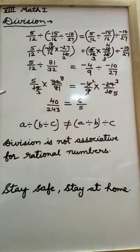This means while dividing 3 rational numbers, they can't be grouped in any order. So we can say division is not associative for rational numbers.